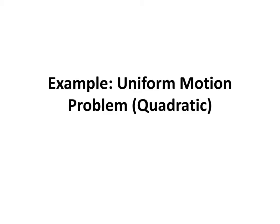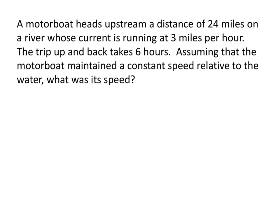In this video, we'll do an example of a uniform motion problem involving a quadratic equation. Here's the problem. A motorboat heads upstream a distance of 24 miles on a river whose current is running at 3 miles per hour. The trip up and back takes 6 hours. Assuming that the motorboat maintained a constant speed relative to the water, what was its speed?